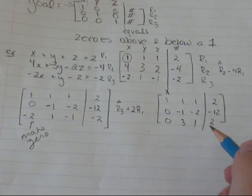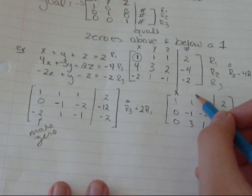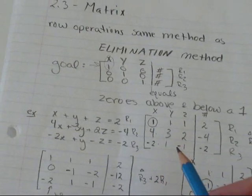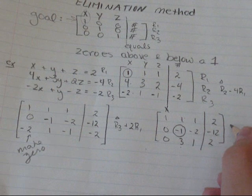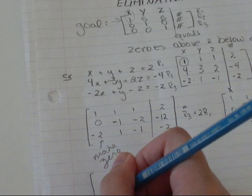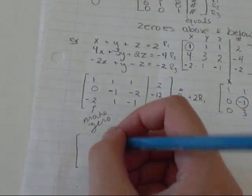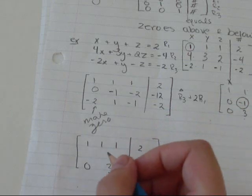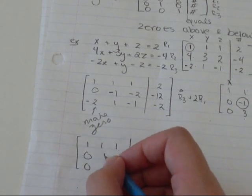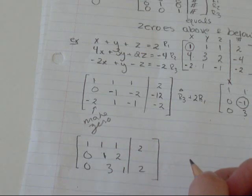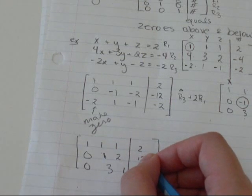Next I need this y-column entry to be a 1, with zeros above and below. I'm going to change row 2 by dividing by negative 1. Row 1 stays: 1, 1, 1, 2. Row 3 stays: 0, 3, 1, 2. For row 2 divided by negative 1: 0 divided by negative 1 is 0. Negative 1 divided by negative 1 is 1. Negative 2 divided by negative 1 is 2. Negative 12 divided by negative 1 is 12.